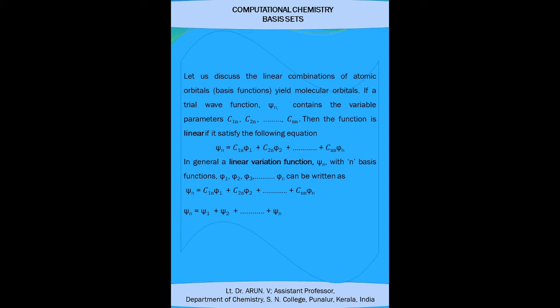Let us discuss the linear combination of atomic orbital wave functions that yield molecular orbitals. Suppose we have a trial wave function psi_n containing a large number of variable parameters c1n, c2n, and so on up to cnn. The function is linear if it satisfies: psi_n = c1n·phi1 + c2n·phi2 + ... + cnn·phi_n.